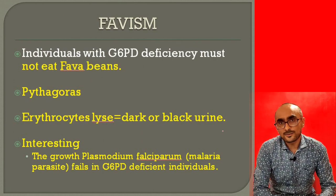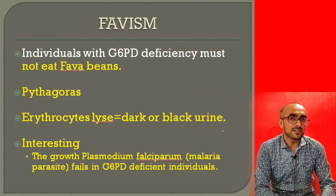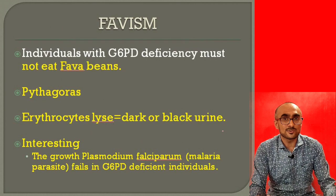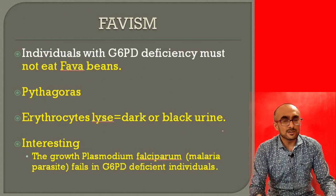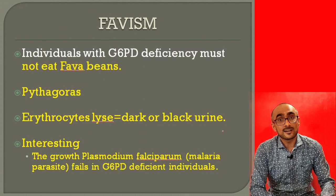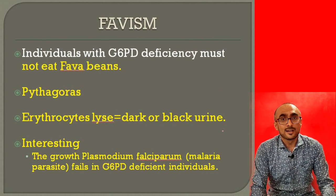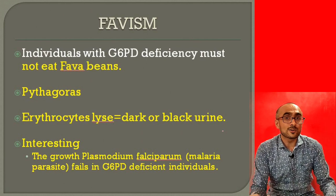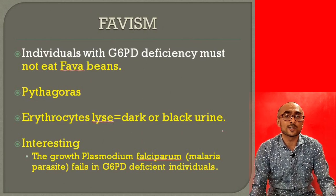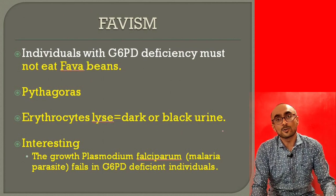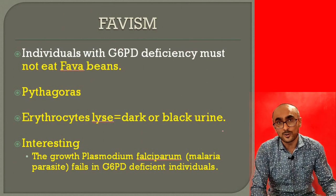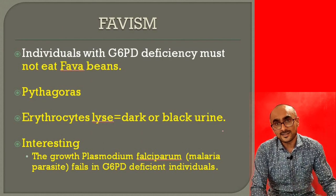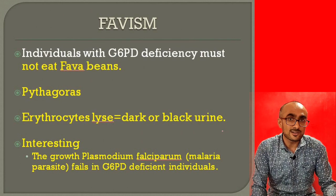Interestingly, individuals with glucose-6-phosphate dehydrogenase deficiency in their cells are not infected by the malarial parasite. Because of G6PD deficiency in their RBCs, the RBC environment is highly oxidative. The malarial parasite cannot survive in this oxidative environment — in fact, the parasite also requires reduced glutathione in RBCs to survive. Without sufficient G6PD to produce NADPH, reduced glutathione is unavailable, and the malarial parasite cannot grow, so these individuals do not show symptoms of malaria even after infection.